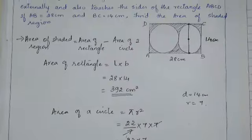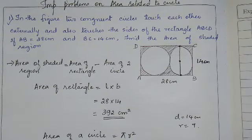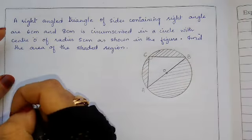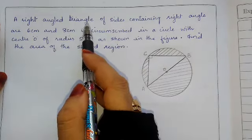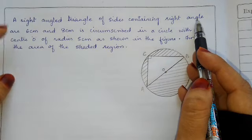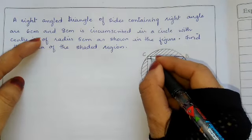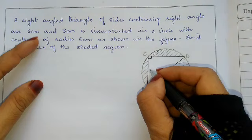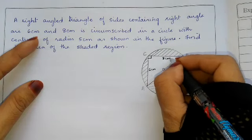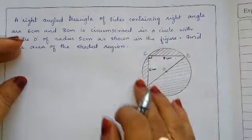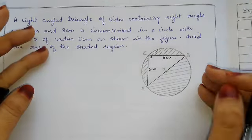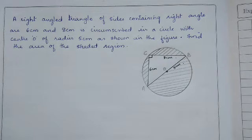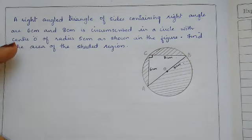Now the next question. A right angle triangle with sides containing the right angle being 6 cm and 8 cm is circumscribed in a circle with center O of radius 5 cm, as shown in the figure. Find the area of the shaded region.